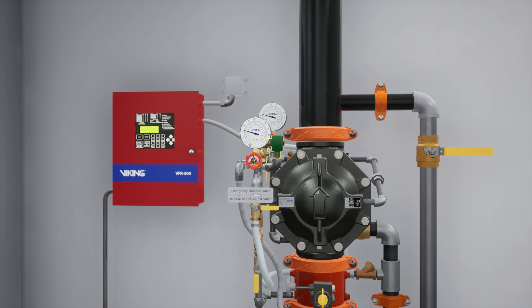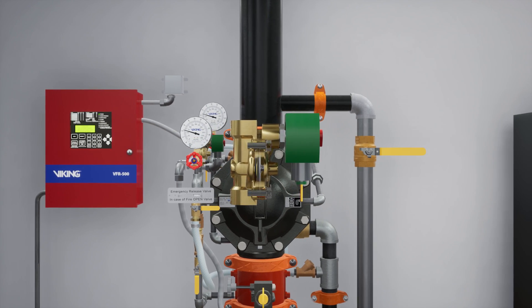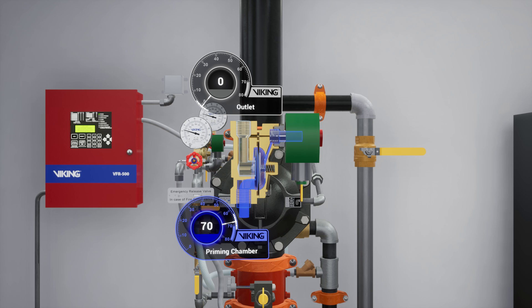The normally closed electric solenoid valve is attached to the top of the prime line. While closed, the solenoid valve keeps water pressure in the prime chamber. When activated open, it releases water pressure from the prime chamber.